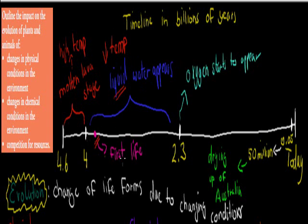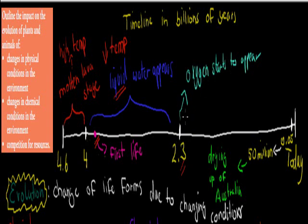As time went on, the organisms changed more and more, but overall it was still quite simple — the bacteria were still quite simple. But as soon as oxygen started to appear, so about 2.3 billion years ago, oxygen started to appear in the atmosphere. Beforehand, there was absolutely no oxygen in the atmosphere. But after a while — a couple of billion years — oxygen started to appear, and that was another big step for life.